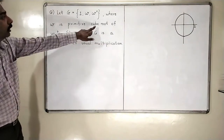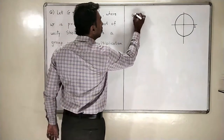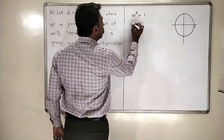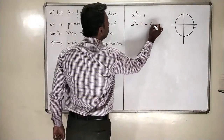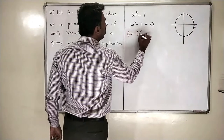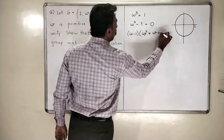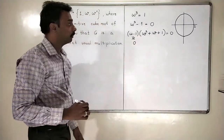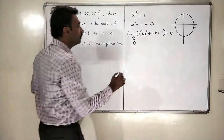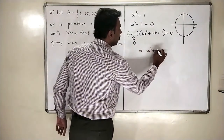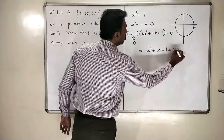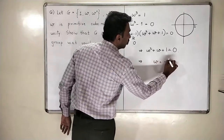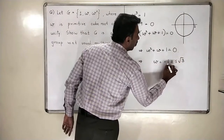Omega is the cube root of unity, so we know that omega cube is equal to 1. That is because omega cube minus 1 equals zero, which factorizes into (omega minus 1)(omega squared plus omega plus 1) equals zero. Since omega is a primitive cube root of unity, omega minus 1 is not zero, which means omega squared plus omega plus 1 equals zero. Solving this quadratic equation, we get omega equals minus one plus or minus i root three, divided by two.